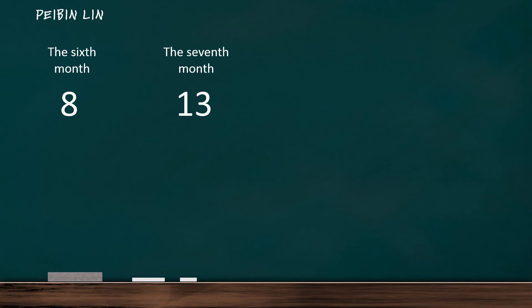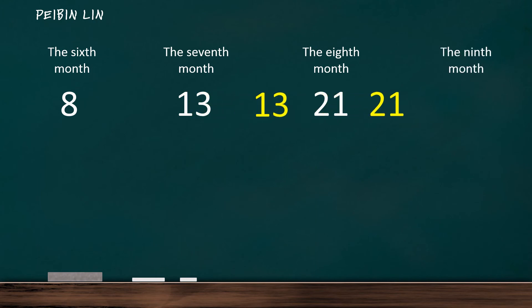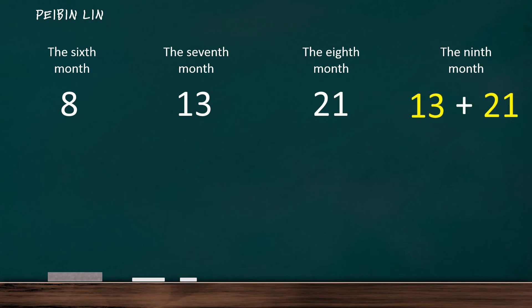Now that the rules have been summarized, the calculations are simple. The pairs of rabbits in month 6 are equal to eight, and the pairs of rabbits in month 7 are equal to 13. So the total pairs of rabbits at month 8 are equal to 8 plus 13, which is equal to 21. Similarly, the total pairs of rabbits in month 9 are equal to 13 plus 21, which is equal to 34.